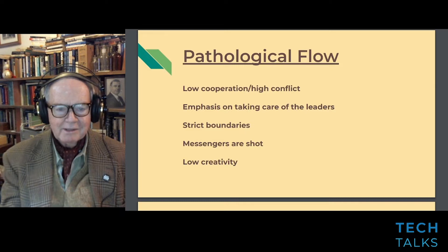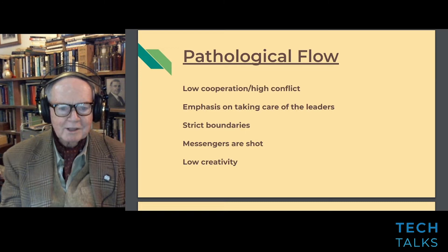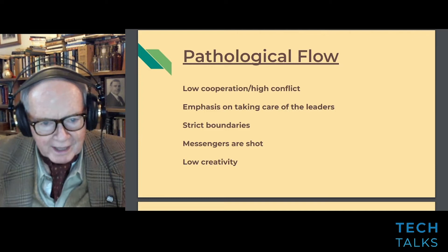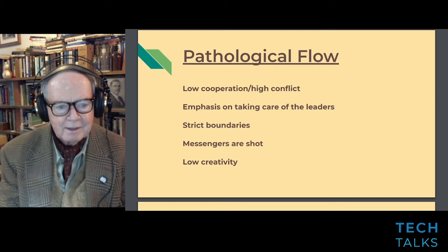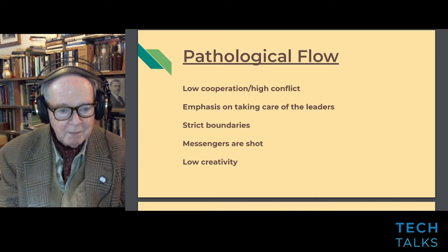Let's look at what characterizes a pathological flow of information. First, cooperation is bad. There's a high level of conflict. The emphasis in pathological cultures is essentially taking care of the leaders — they think the organization is about them. There are strict boundaries, and messengers are shot.